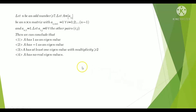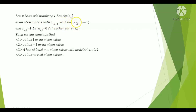Now let's solve a CSIR NET problem. Let n be an odd number greater than or equal to seven, and let A be an n×n matrix where a(i, i+1) equals one for all i equals one to n minus one, and a(n, 1) equals one.